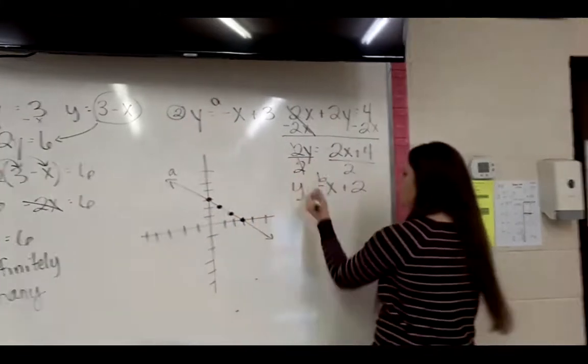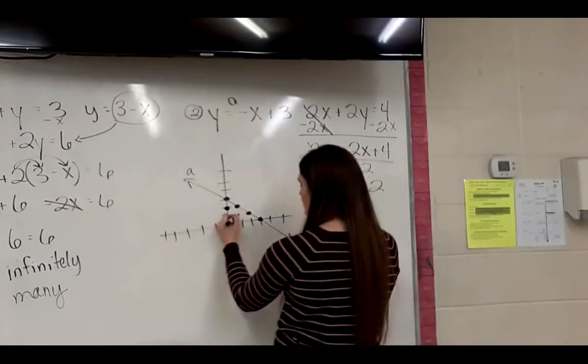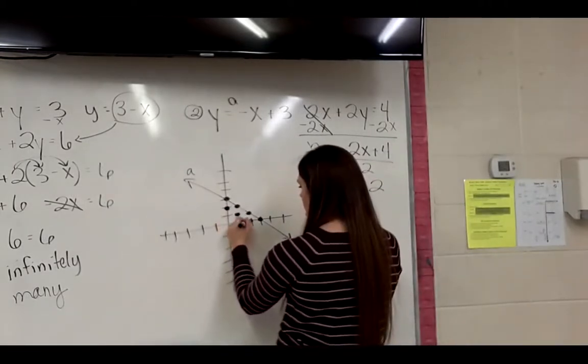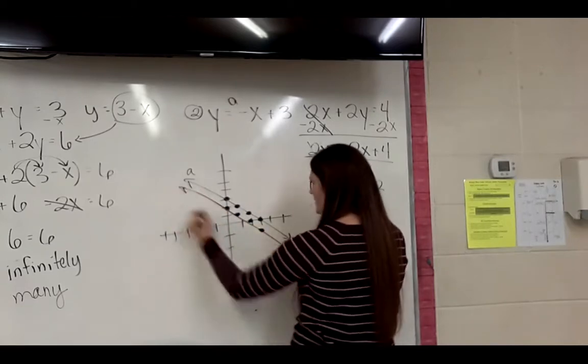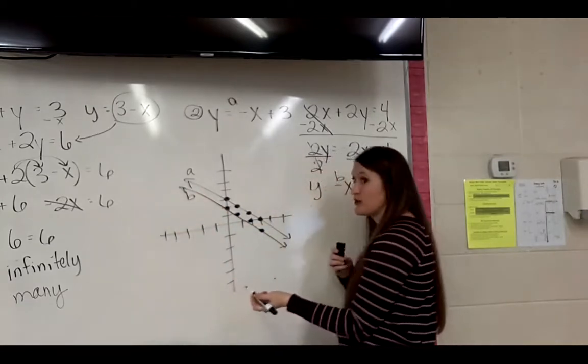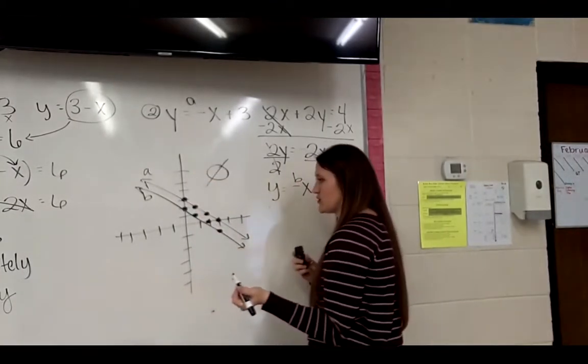I'll call this line A. And this one line B. So it starts at 2. And it has the same slope. Down 1 over 1. So these two lines are parallel, which means they will never intersect, which tells me there is no solution at which they will intersect.